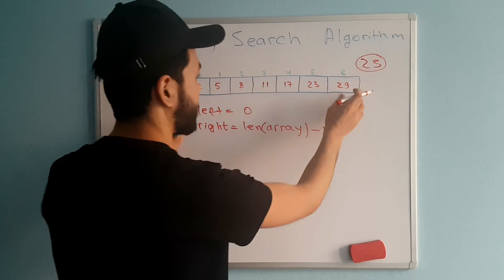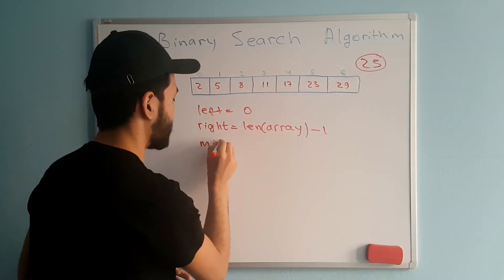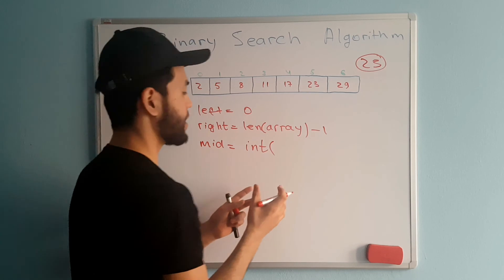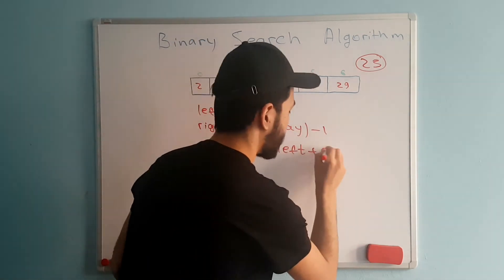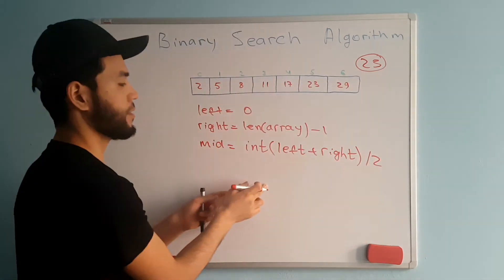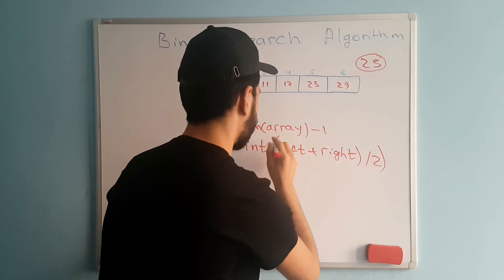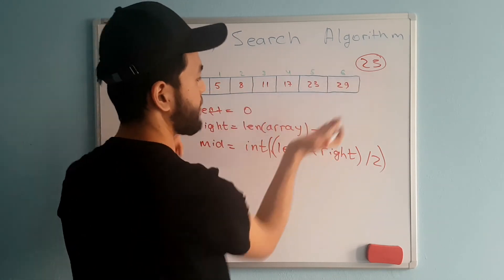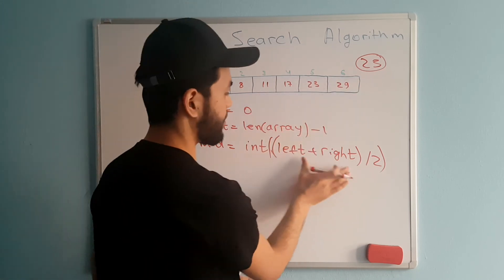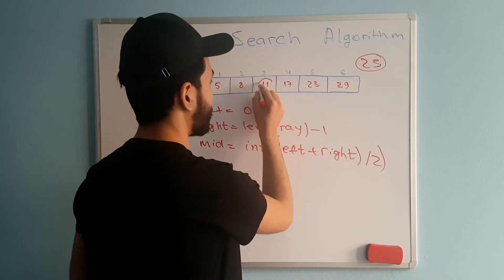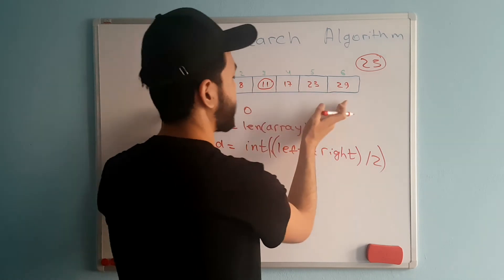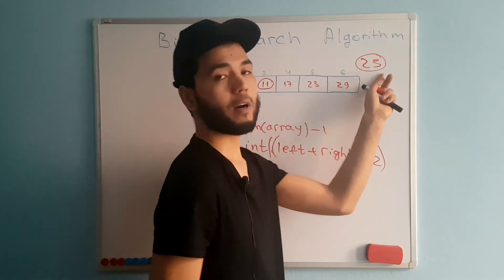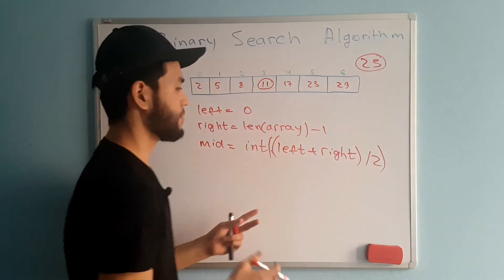We also have a third variable — the middle. To find the middle we use int((left + right) / 2), taking the integer since we are dividing by two each time. In this case, left is 0 and right is 6, so 0 + 6 divided by 2 equals 3 — which corresponds to the value 11 in the array. We then compare the middle element (11) with our target value. If the middle equals the target, we return the middle index.